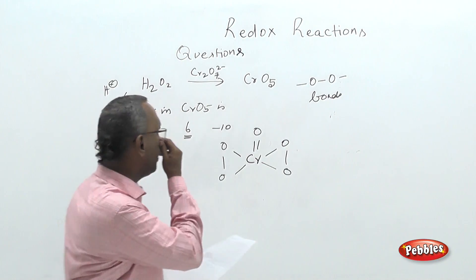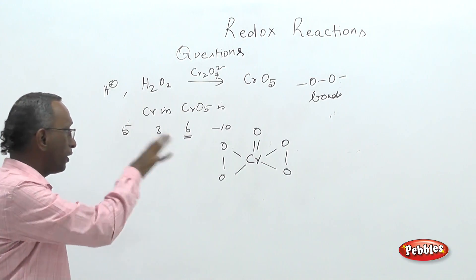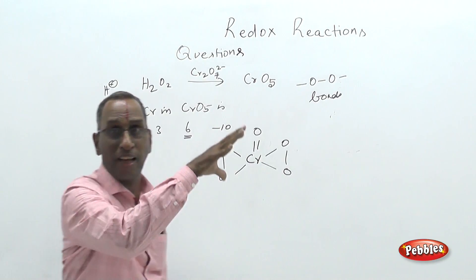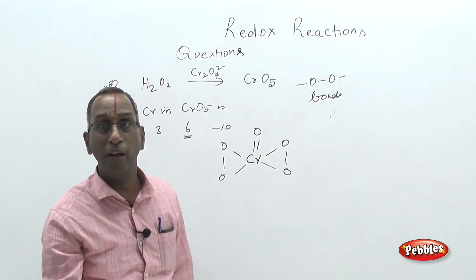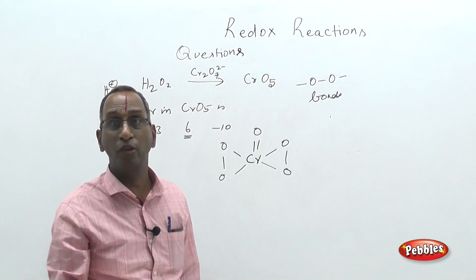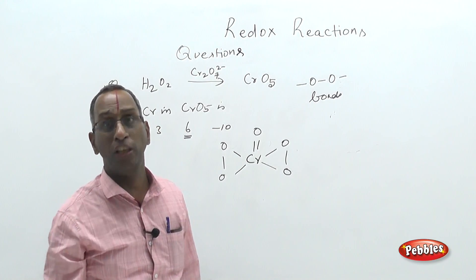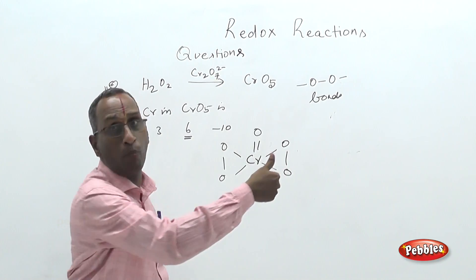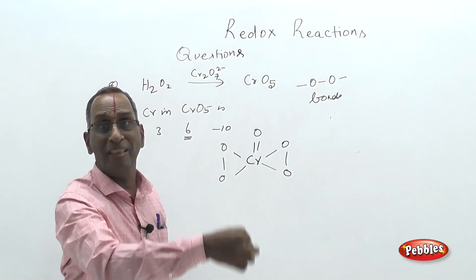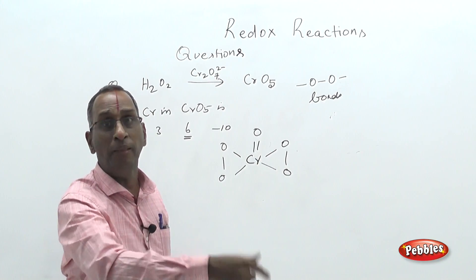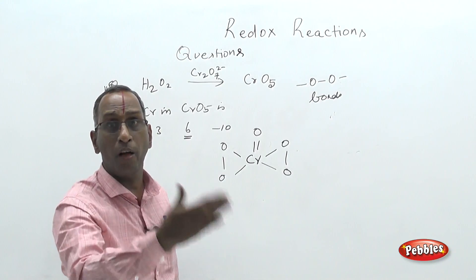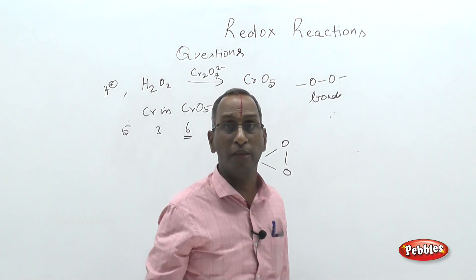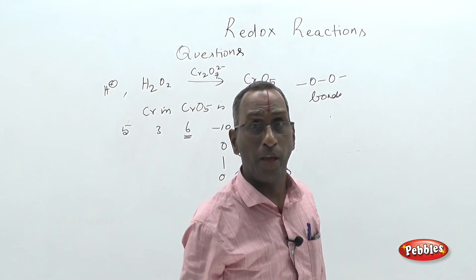This finishes the treatment of Question 2. The question combined d-block element chemistry with redox equations. Chromium is the d-block element and CrO₅ is its pentoxide compound.